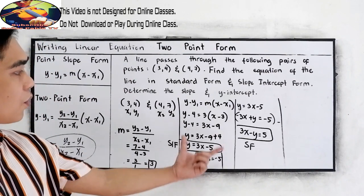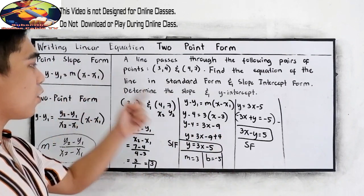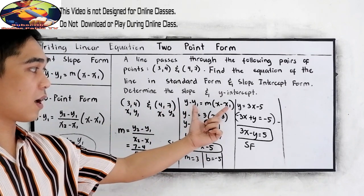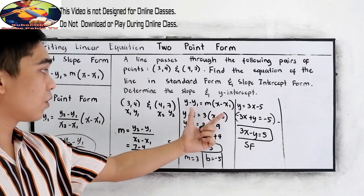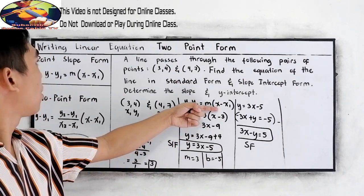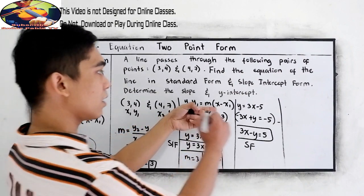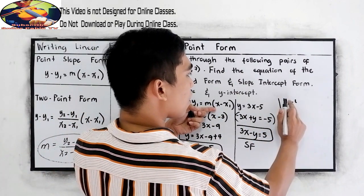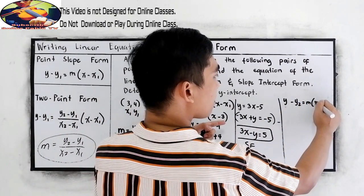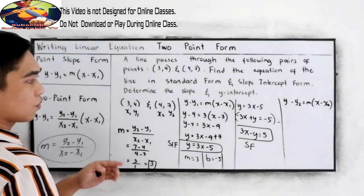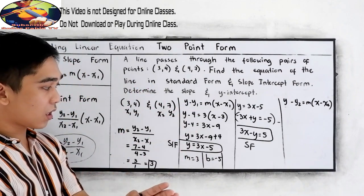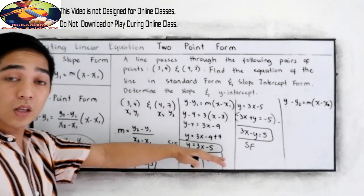Now, in our point slope form, we use x sub 1 and y sub 1 as our point. What if we're going to use the x sub 2 and y sub 2 to substitute in our point slope form? Let's say, y minus y sub 2, this one, is equal to m times x minus x sub 2. We're going to pick this value or this point. We're just going to check if we will come up with the same answer. This is just an experiment.